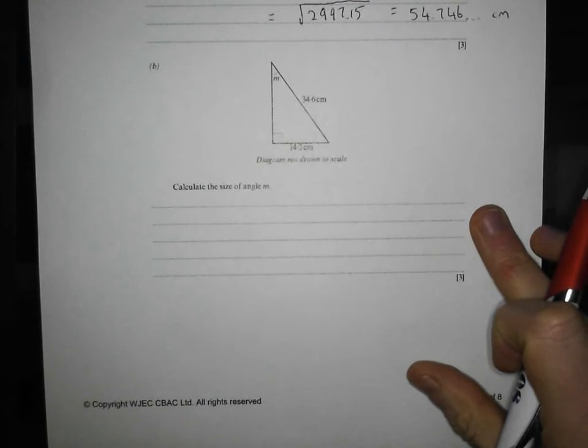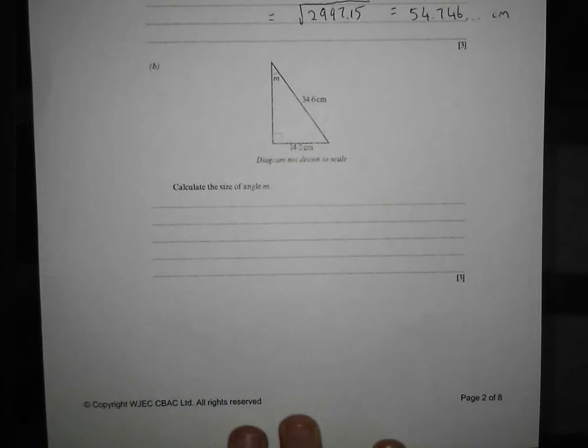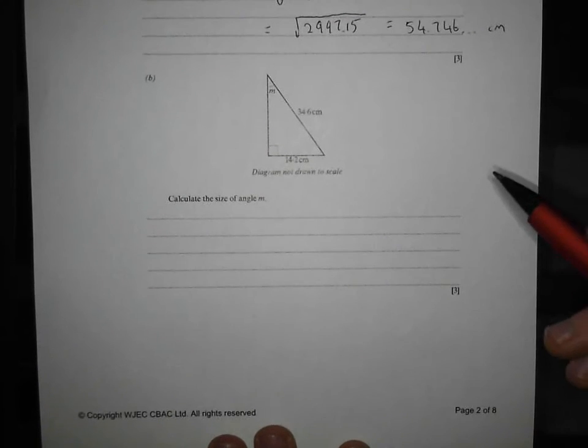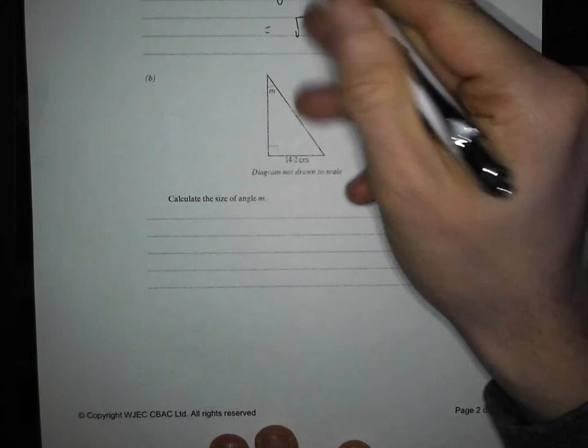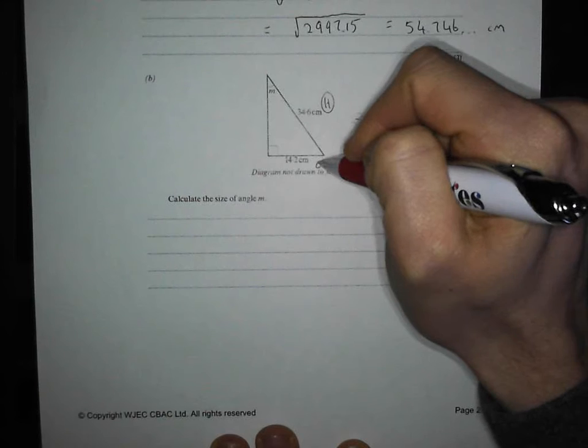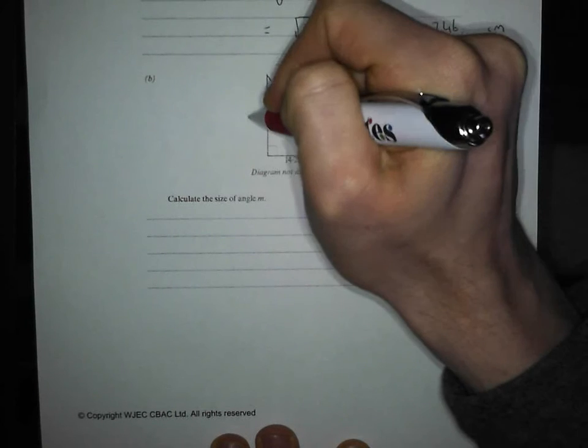Now what's going on here? I've got two sides and I need to work out an angle. That should set an alarm bell off that this has to be a SOHCAHTOA question. So I'm going to go into Automatic Pilot, label my sides. Opposite the right angle, hypotenuse. Opposite the angle, opposite. Between the right angle and the angle, adjacent.